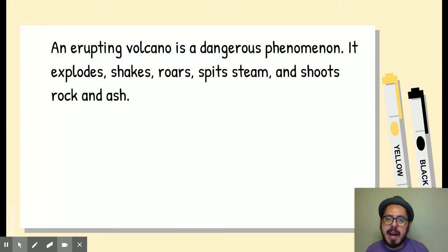So then we have this sentence that we've been using before. An erupting volcano is a dangerous phenomenon. It explodes, shakes, roars, spits steam, and shoots rock and ash. What I want you to do is try to translate this sentence on your own. First try it with your own knowledge, then you can double check it in Google Translator if you need to. Whenever you wrote it down in your journal and you're ready, come back and hit the pause button again. So pause.